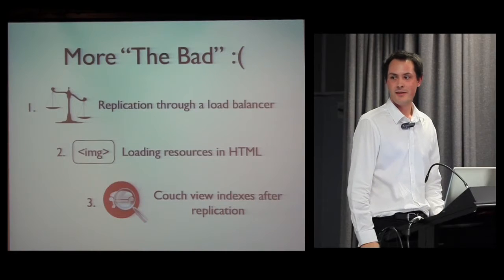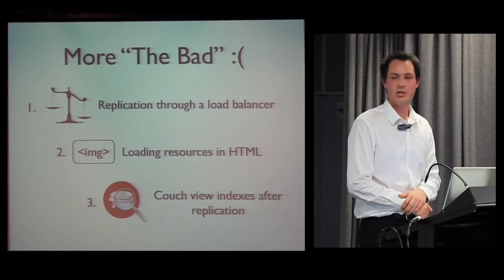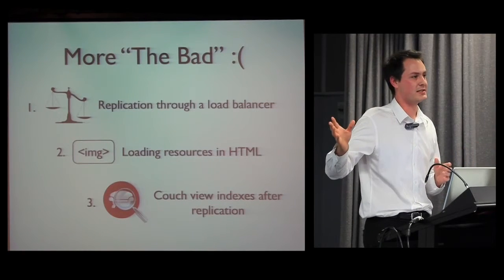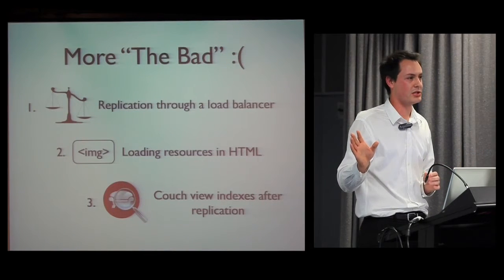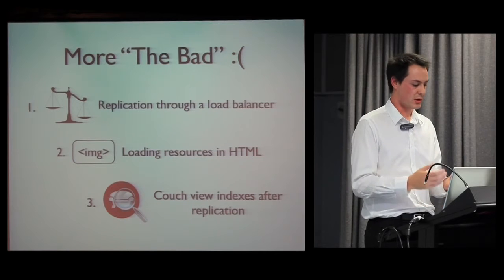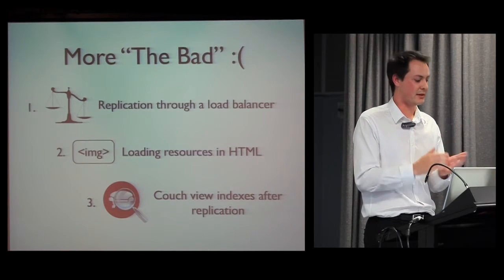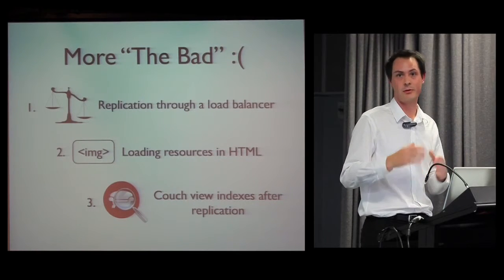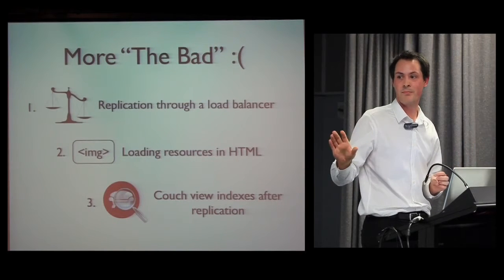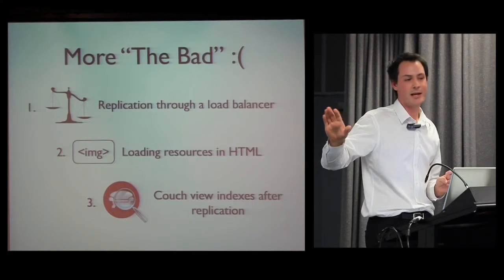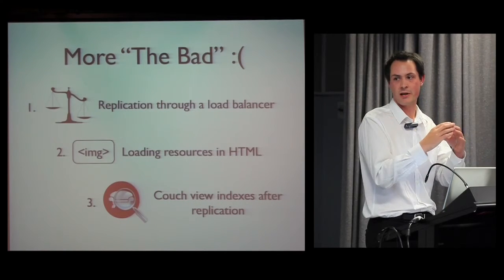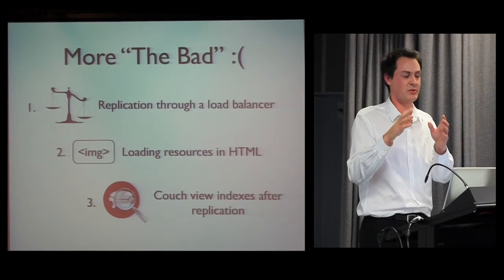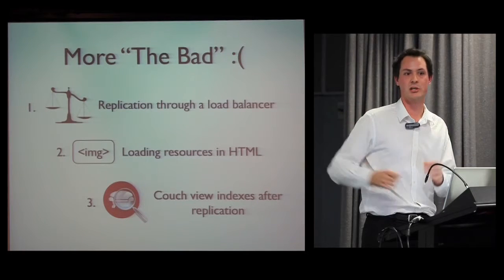The third issue: Couch indices. When calling views on Couch which return subsets of documents, it indexes them for fast retrieval. But once you've done a replication, it throws all that in the bin. Users going back to the app after replication would experience really slow performance because all these views had to scan every single document to rebuild indexes. The workaround was to hit every view after replication and incorporate that into the sync time — users thought it was still syncing, but we were actually pre-warming all the indexes we'd need.